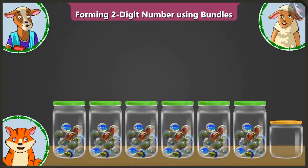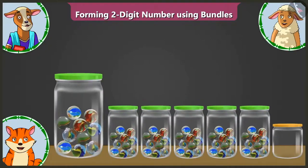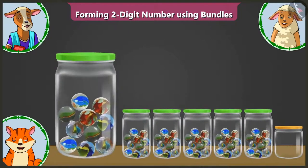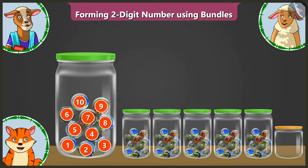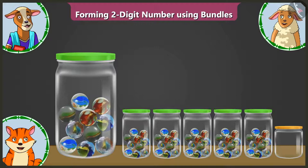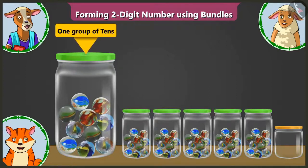Look, here are some jars filled with marbles. Let us count. The first jar has one, two, three, four, five, six, seven, eight, nine, and ten marbles. This means that this is one group of tens.